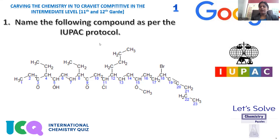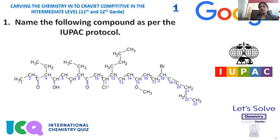The first question is from IUPAC nomenclature. IUPAC stands for International Union for Pure and Applied Chemistry. We are asked to name a compound as per IUPAC protocol. The long chain provided contains a ketone, ethyl, hydroxy, another ethyl, ketone, chloro, butyl, methoxy, bromo, a triple bond alkyne, and a chain of 23 carbons. We need to follow rules provided by IUPAC to assign the name and numbering.